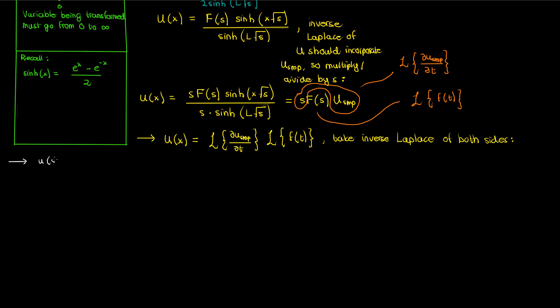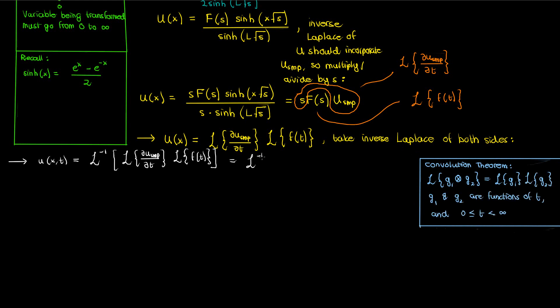Now the inverse Laplace of capital U is U, the function we want to find, and on the right hand side we've got the inverse Laplace of the product of two Laplace transforms. Now does this product of two Laplace transforms ring a bell? Think about it for a second. It should because it all ties into the convolution theorem. The Laplace transform of the convolution of two functions of time g1 and g2 is the product of their individual Laplace transforms. So here in our equation for U we've got the product of two Laplace transforms. This means that the inverse Laplace is then the convolution of the original functions.